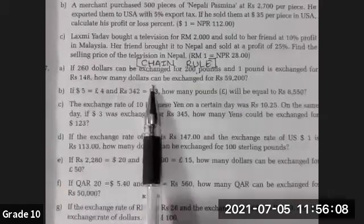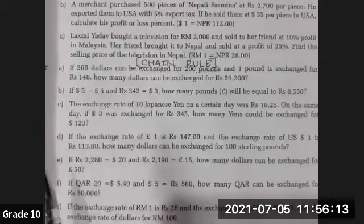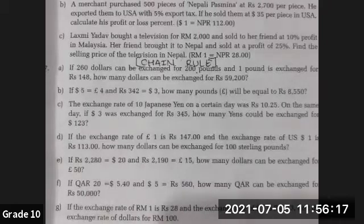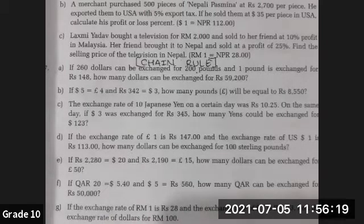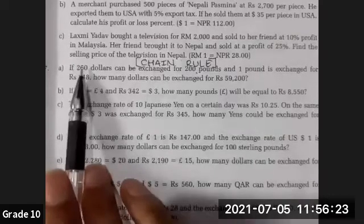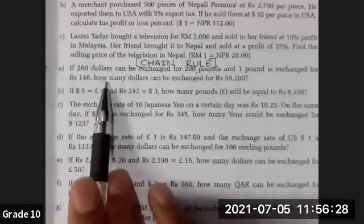How many dollars can be exchanged for 59,200 rupees? There are two relations given with three currencies: dollar, pound, and Nepali rupees. We have identified dollar, pound, and Nepali rupees, and their relations. First relation is dollar to pound, second relation is pound to rupees.